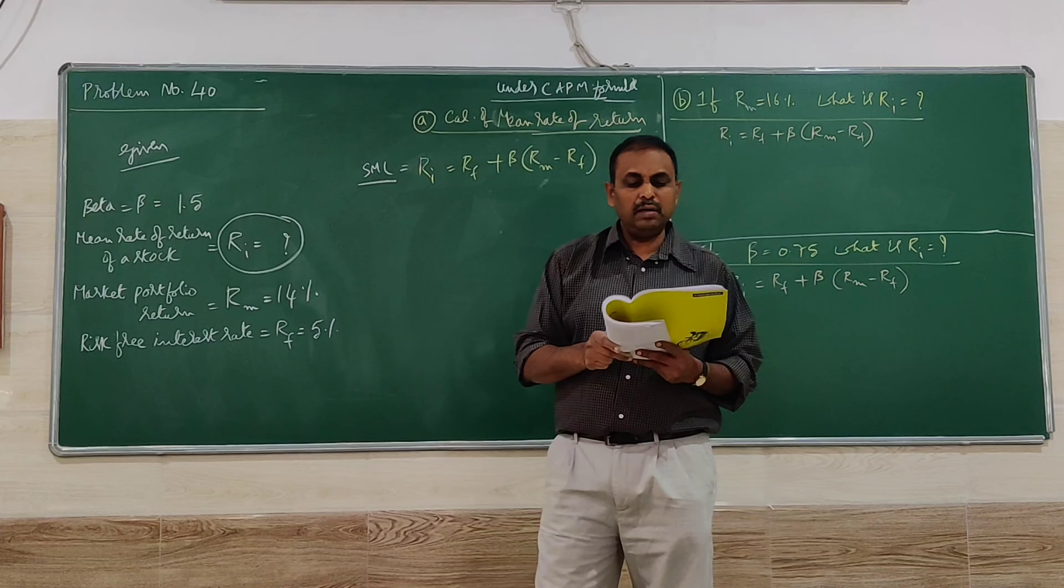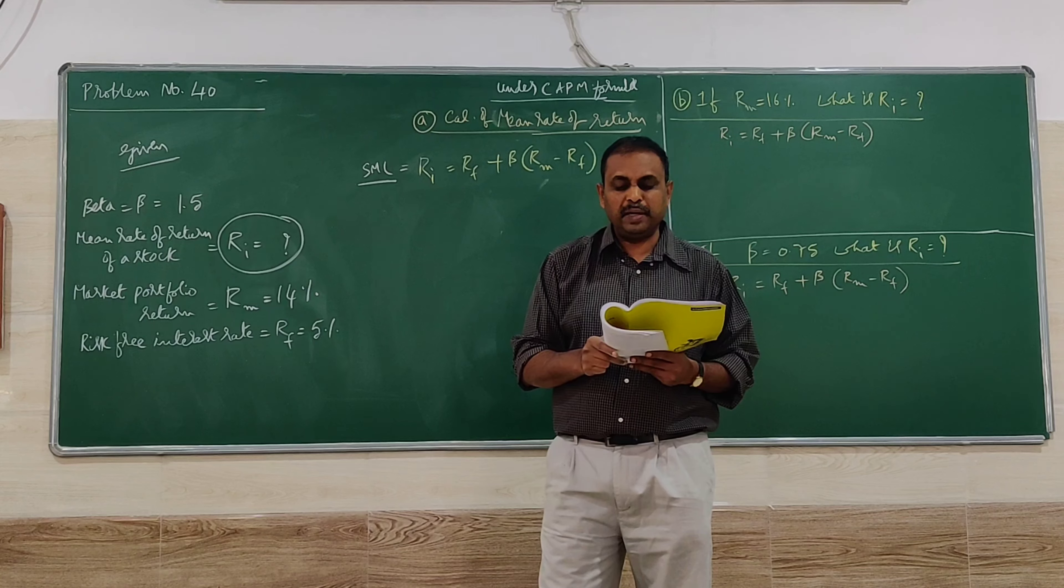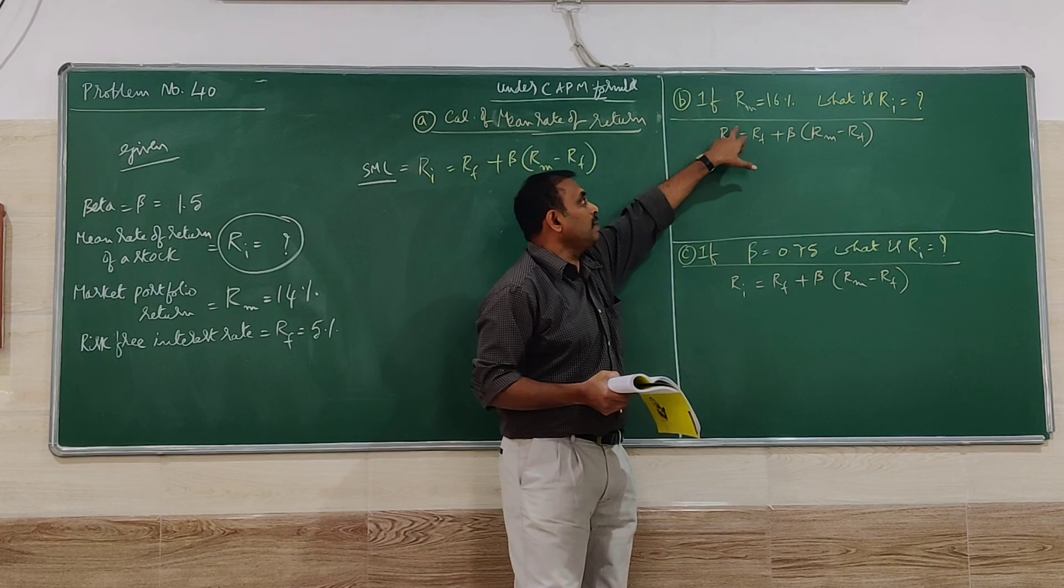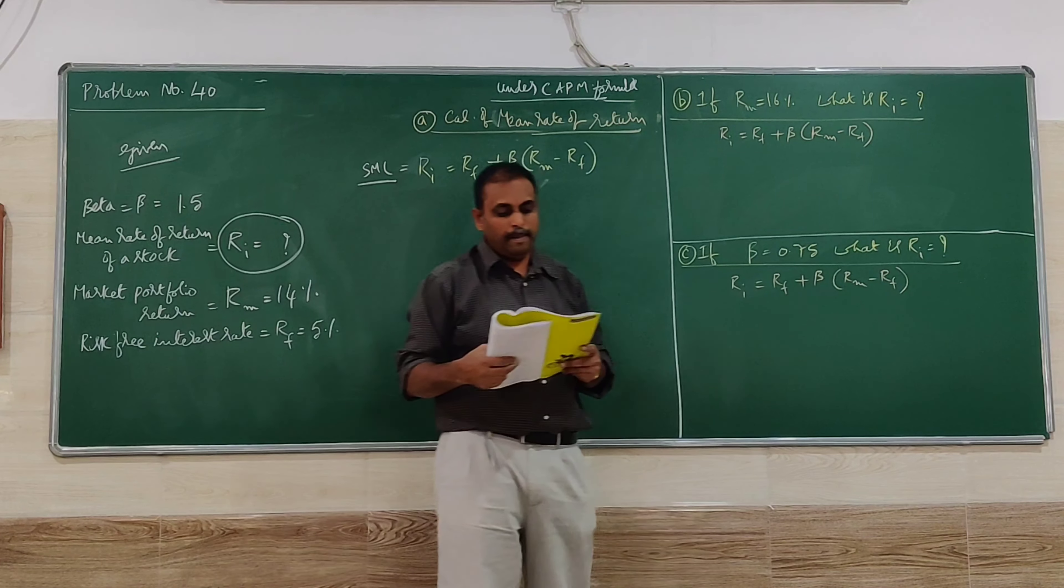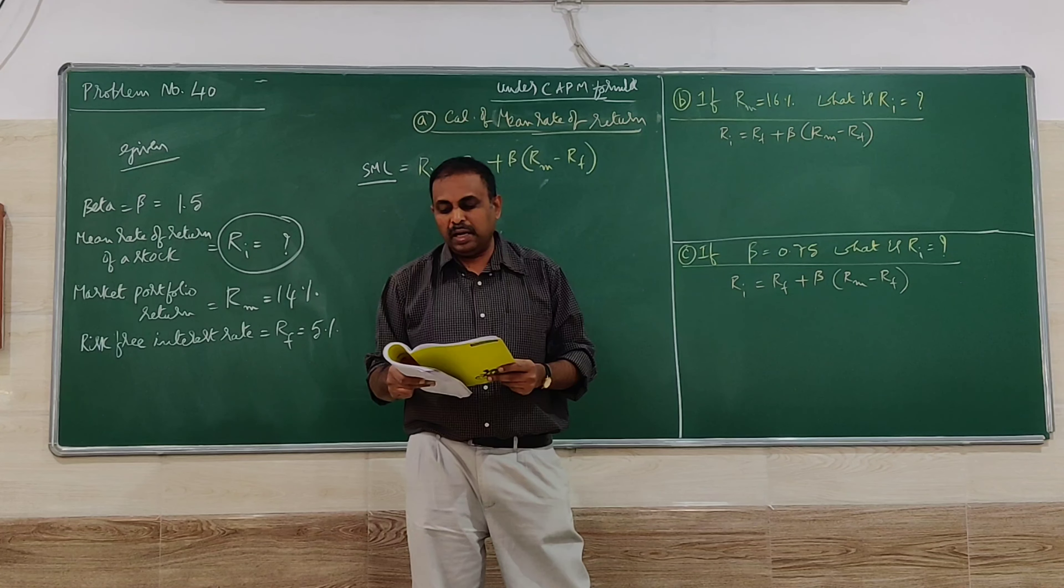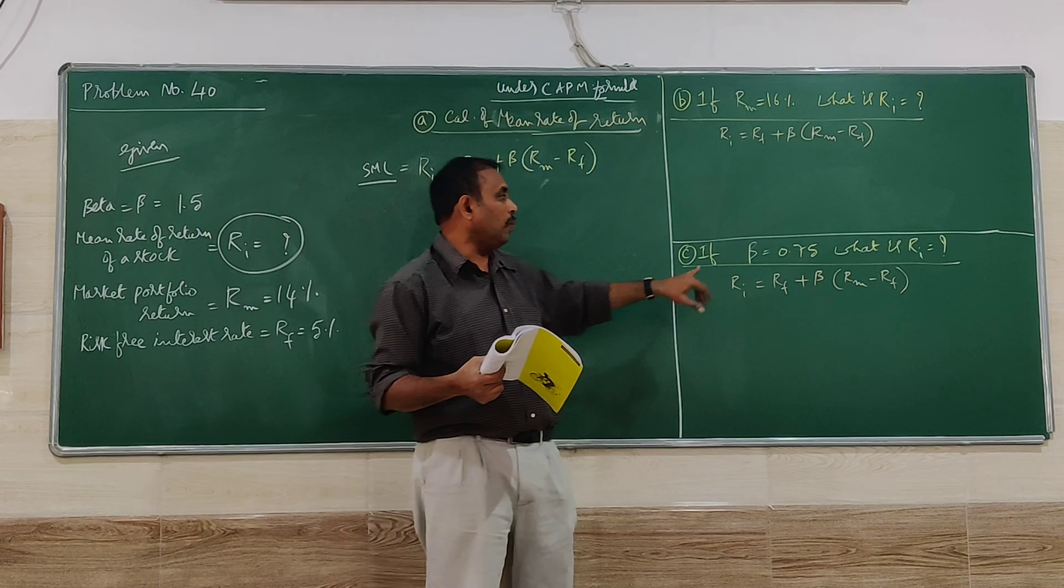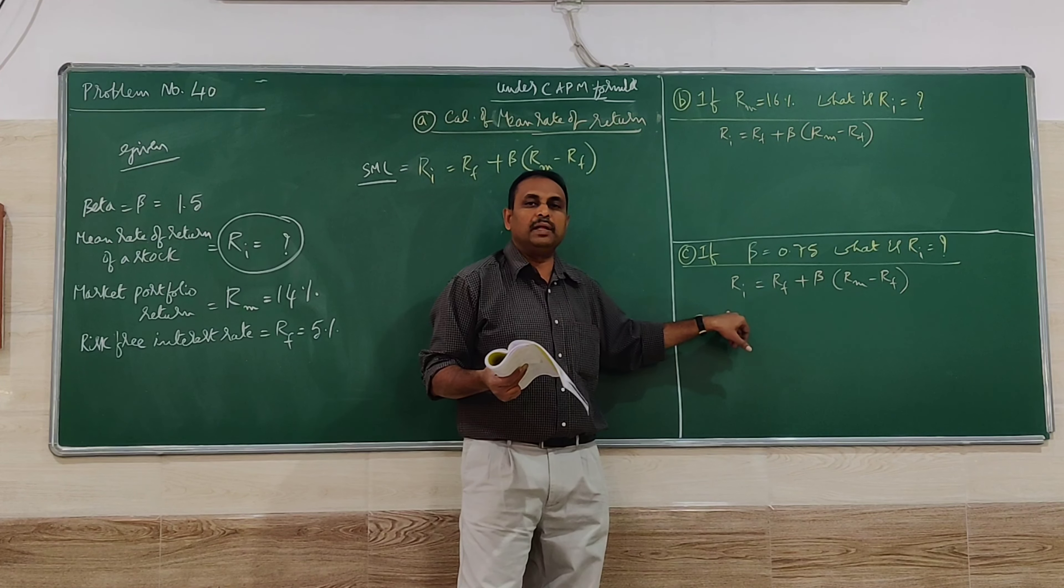Second question: What happens to expected return if RM increases to 16%? Third question: What happens if beta falls to 0.75? We are finding RI assuming other variables do not change.